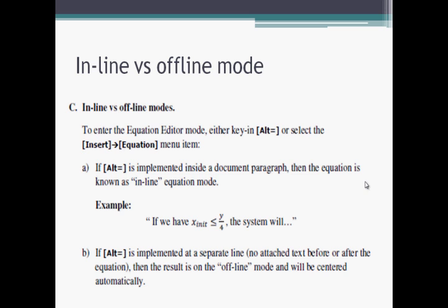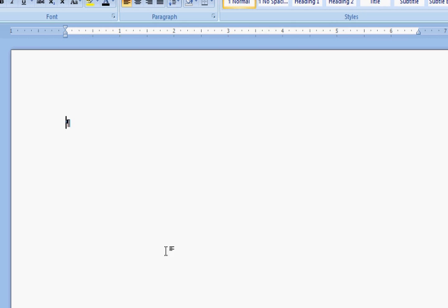Before jumping to equations, there are two modes for writing them: you can write an equation in the same line or in a new line. The first is inline mode, where the equation appears in the same line as other text. The second is offline mode, where the equation appears on a separate new line.